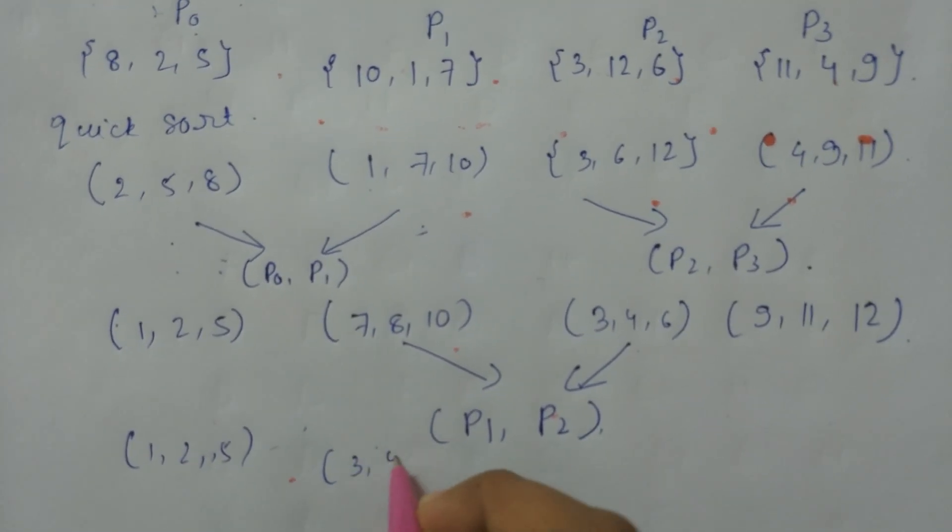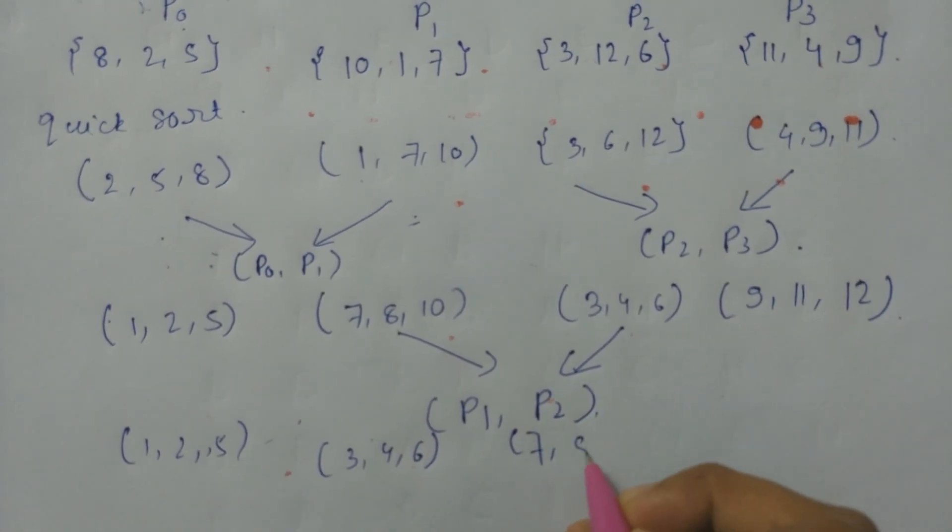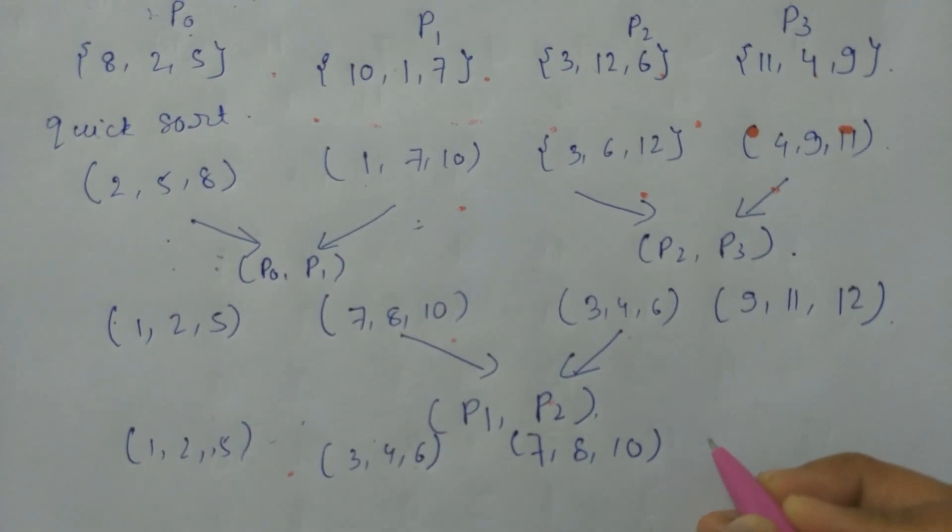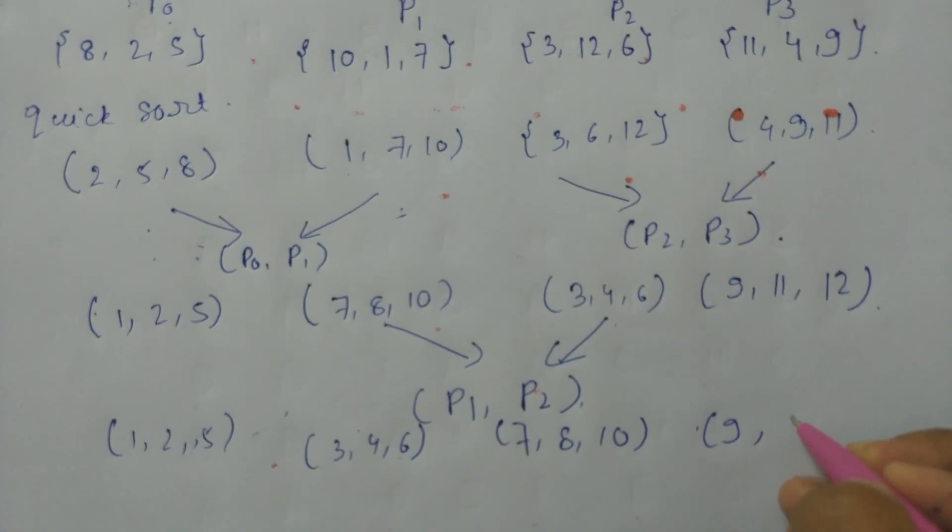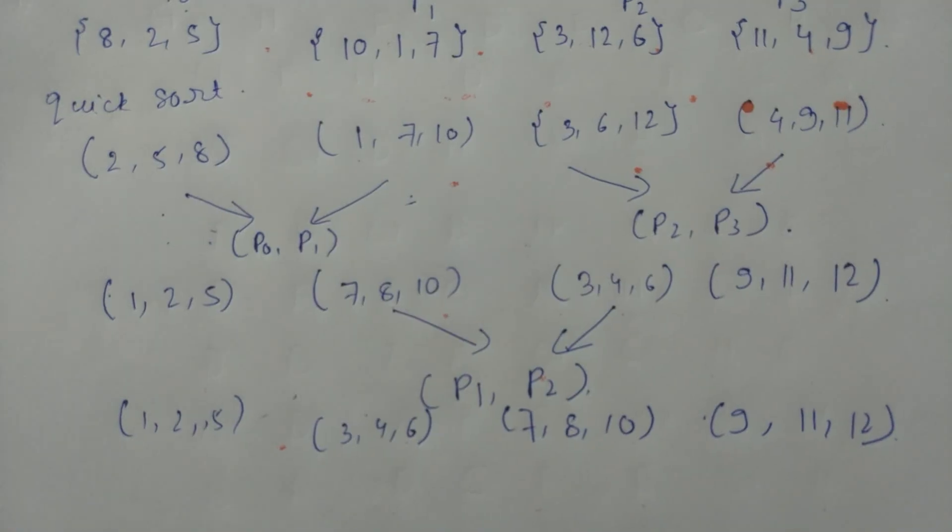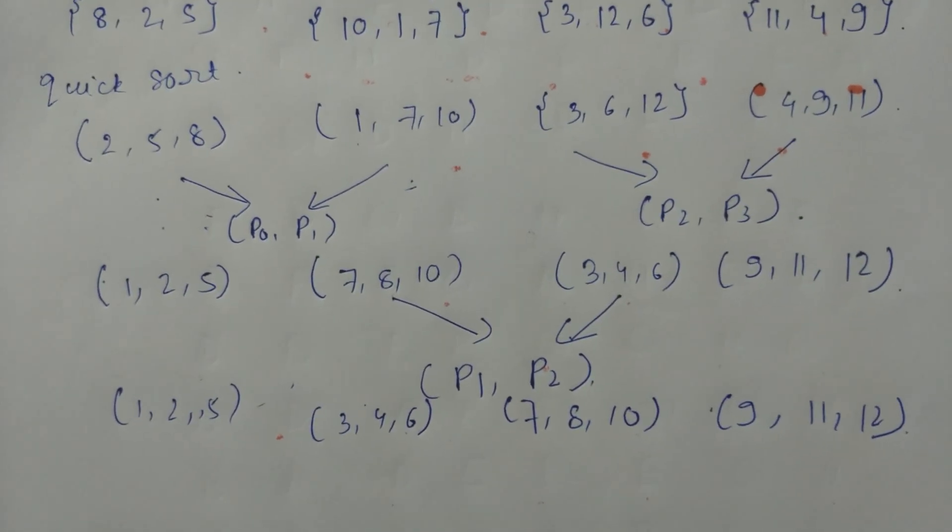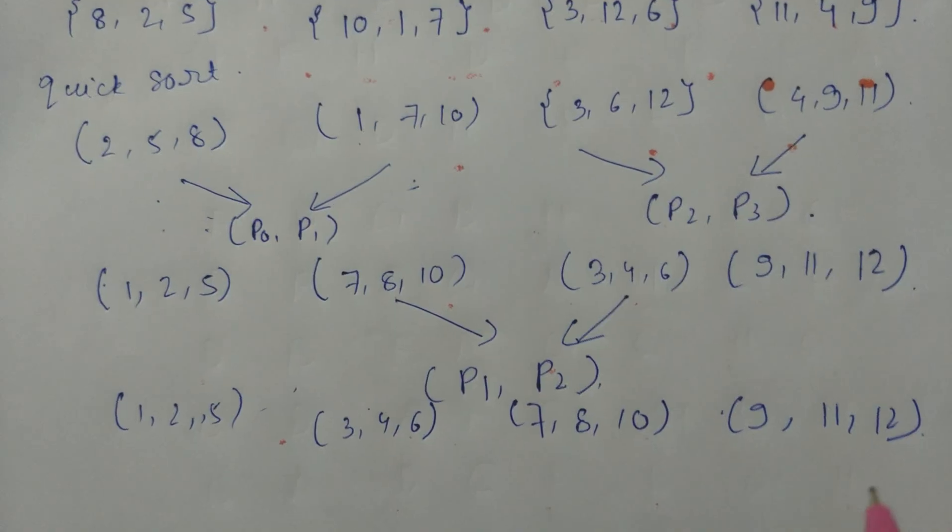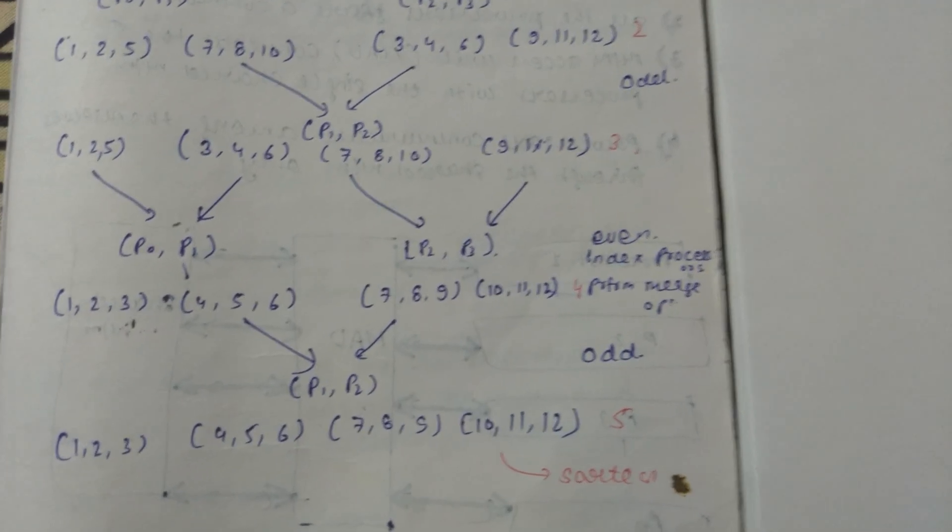And 9, 11, 12. We will repeat the process till we find the complete sorted list. So this is the answer that we will get after all the odd-even transformation.